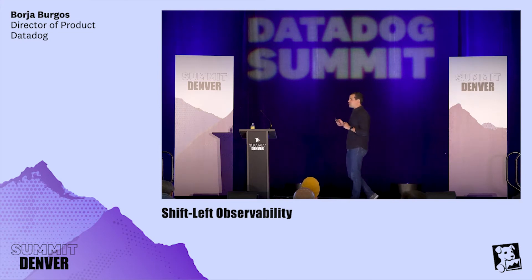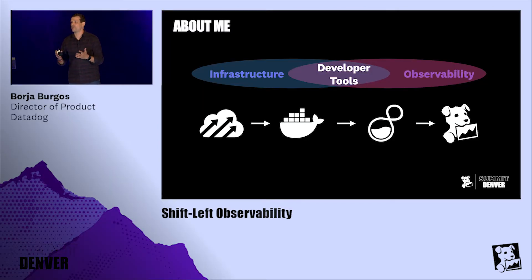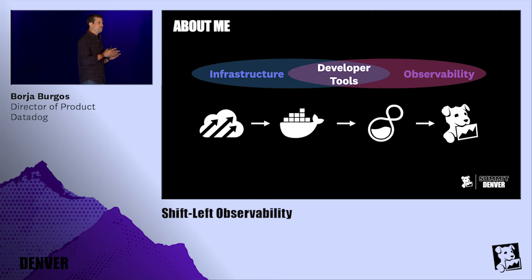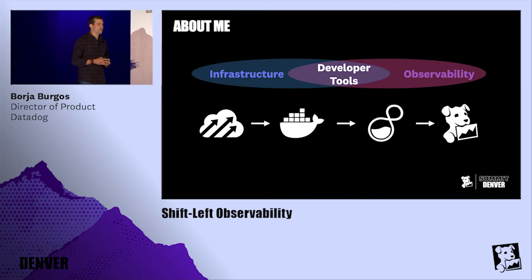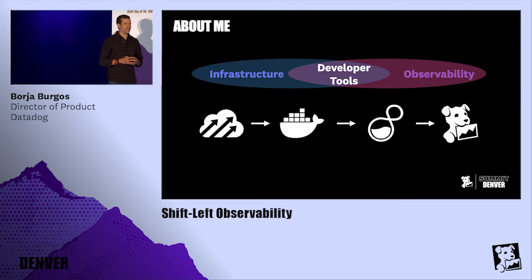Before I tell you about shift left observability, I'm going to tell you a little bit of background about me, only because it's relevant. I spent most of my professional career working on developer tools — I've been working on developer tools because I have been frustrated, first as a developer, with how hard it was to run my applications in the cloud. I started a company back in 2013, doing things around containerized applications, before the great days of Kubernetes being everywhere and when Docker was just getting started.